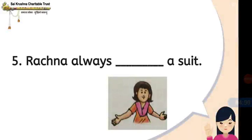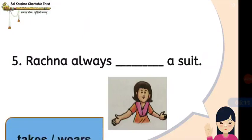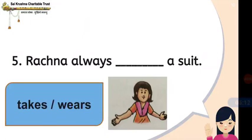The fifth question is: Rachana always dashes a suit. The options are takes or wears. The answer is wears — Rachana always wears a suit.